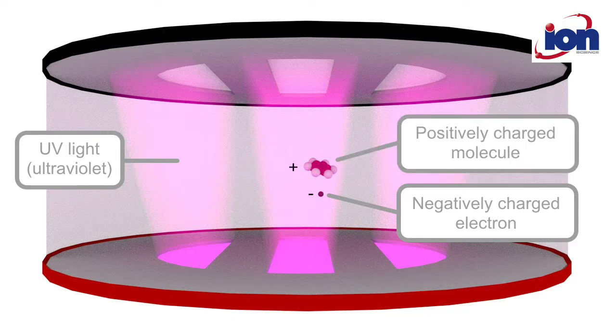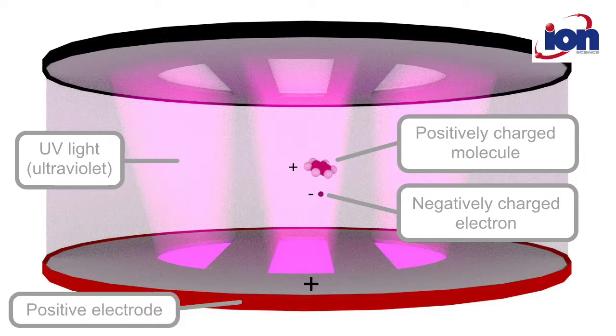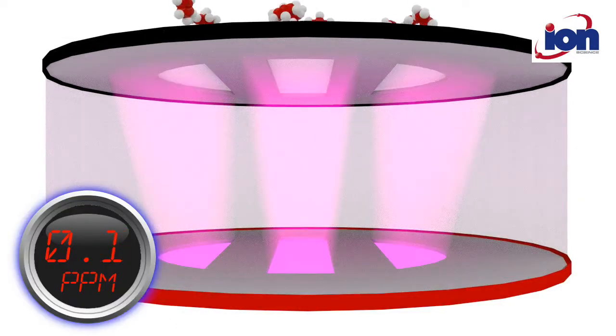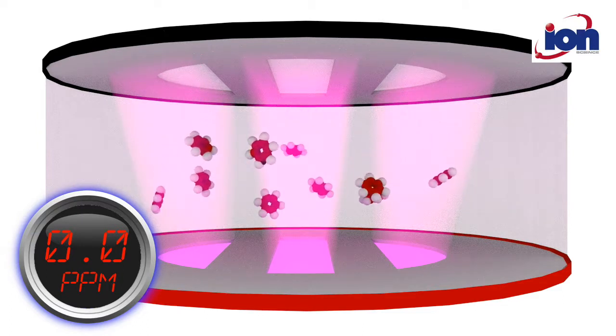The negatively charged electrons are attracted to the positive electrode, while the positively charged molecules are attracted to the negative electrode. This results in the generation of a tiny electrical current that increases with gas concentration.